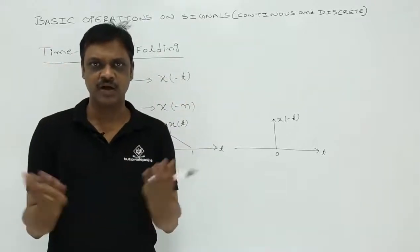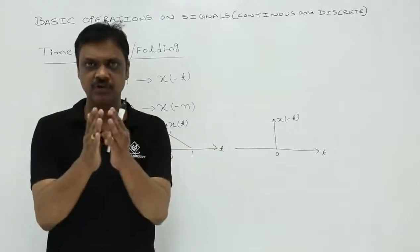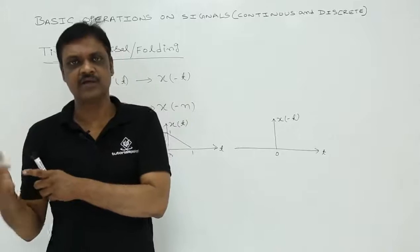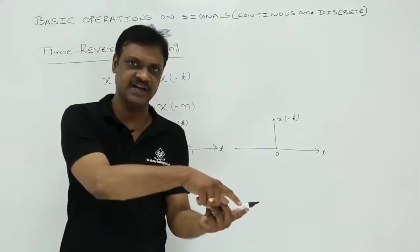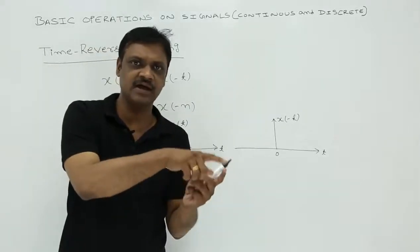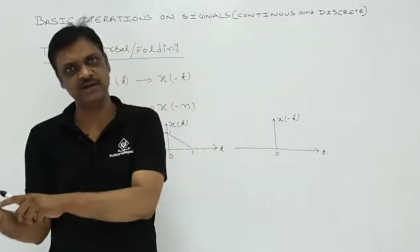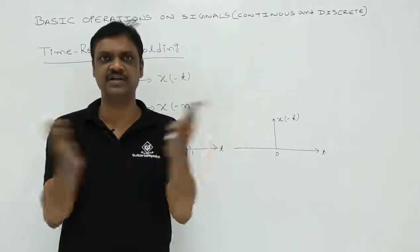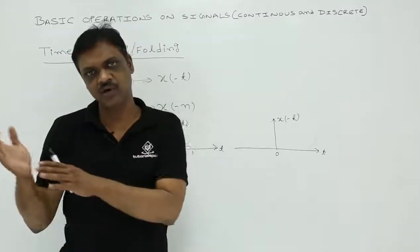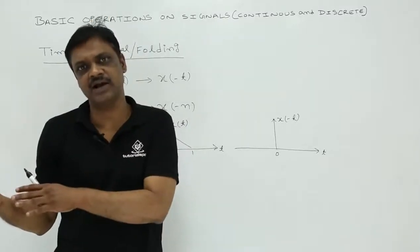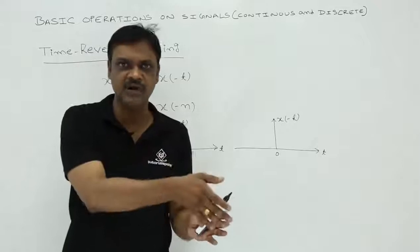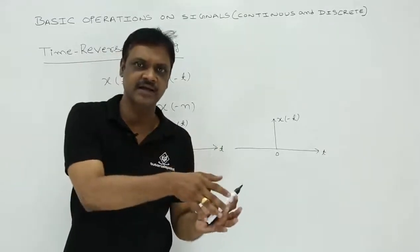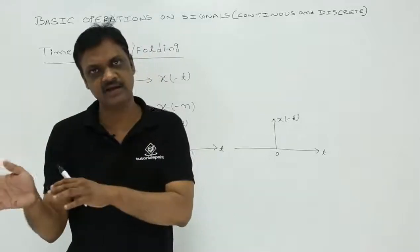Suppose you have a book. When you fold the book, whatever image is there on the right page will be displayed on the left side, and whatever image is there on the left side will be displayed on the right side. Similarly, here also you just fold the signal about the y-axis, so whatever signal is there on the right side will be available on the left side.